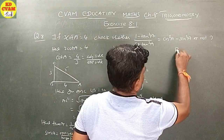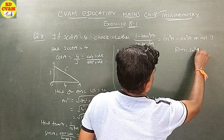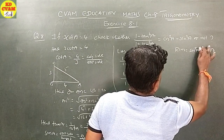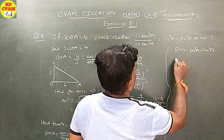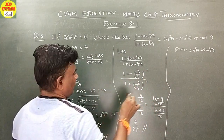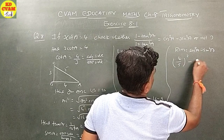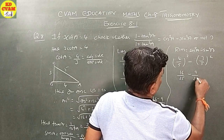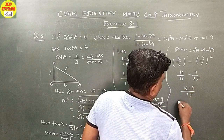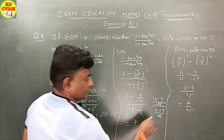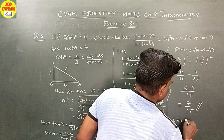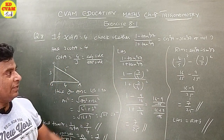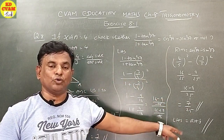RHS equals cos squared A minus sin squared A. That is, (4 upon 5) squared minus (3 upon 5) squared. Equals 16 upon 25 minus 9 upon 25, which equals 7 upon 25. LHS equals RHS. Therefore, check is done.